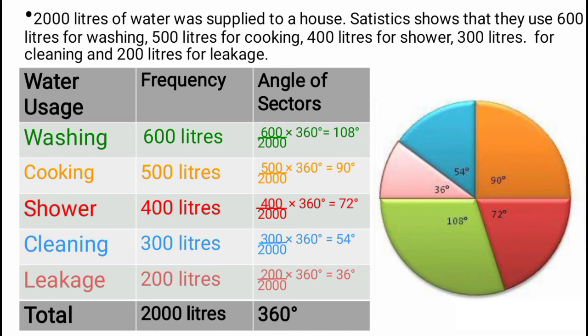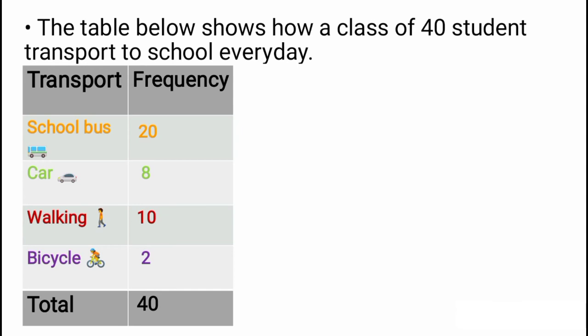Let's do one more question and wrap up this video. The question goes: the table below shows how a class of 40 students transports to school every day. In this question, the table has already been given to us, so we move straight to angles of sector. We have transport and frequency: 20 students used the school bus, 8 students came by car, 10 students walked, and 2 used their bicycles.